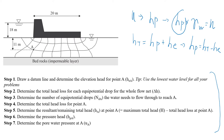First, let's find the total head for the whole flow net that causes water to flow from left to right. We find the two water levels and take the difference — that gives us 18 meters. Now we define the datum. My tip is to always use the lowest water level as the datum, as it makes calculations much easier. In this case, the lowest water level is our datum.